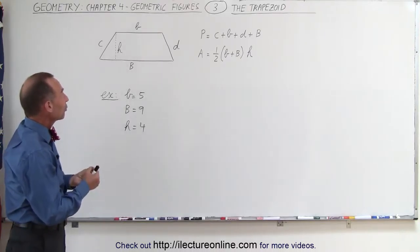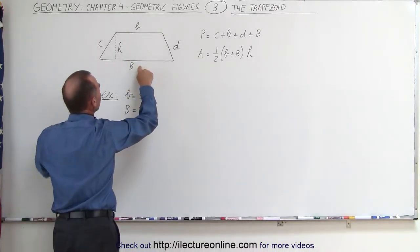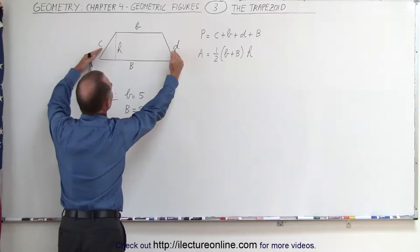In the case of the trapezoid, there's only one set. Here you can see that the top and the bottom, those two are parallel to one another, but the left and right sides are not.